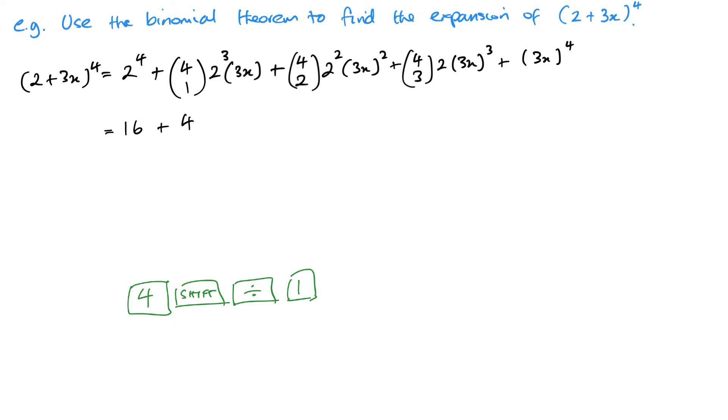So this is going to be 4 times 2 cubed is 8 times 3x plus. Now you can do the same again in your calculator. You can do 4, shift, divide, and then the button 2 to get your next value. Or you can use the arrows in your calculator to go back to the previous bit that you typed in, your previous input, and just change the 1 to a 2, just to save you a little bit of time. That comes out as 6 times 2 squared is 4 times, and then 3x squared will be 9x squared.